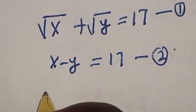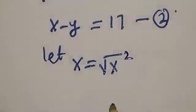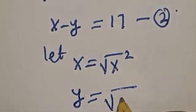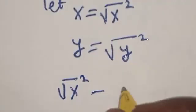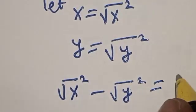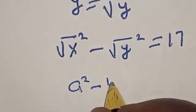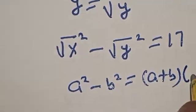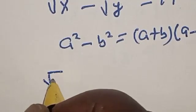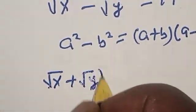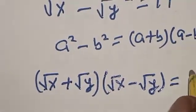From equation 2, let's transform this. Let x equal square root of x squared, and y equal square root of y squared. Now substituting, we have square root of x squared minus square root of y squared is equal to 17. This is a difference of two squares — that is, a squared minus b squared equals (a plus b) multiplied by (a minus b). So we have square root of x plus square root of y, multiplied by square root of x minus square root of y, is equal to 17.